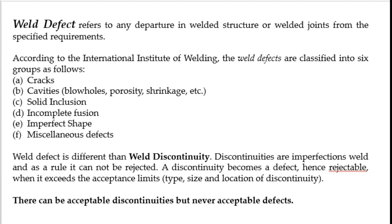The definition of weld defect is: a weld defect refers to any departure in weld structure or weld joints from the specified requirements. Whatever is the requirement, if we are not fulfilling it or departing from it — whether it is good or bad — if it is not required, we will call it a weld defect.